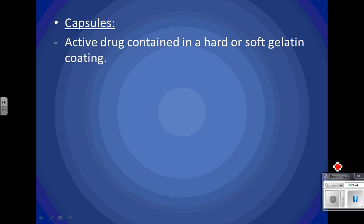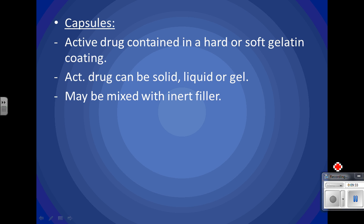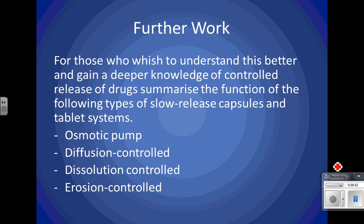Capsules contain the active drug in a hard or soft gelatin coating. The drug can be a solid, liquid, or gel, and may be mixed with a filler. They release the drug more slowly than a conventional tablet. For those wanting band 6 knowledge, you should also understand the other types of slow-release capsules: osmotic pump, diffusion control, dissolution control, and erosion control.